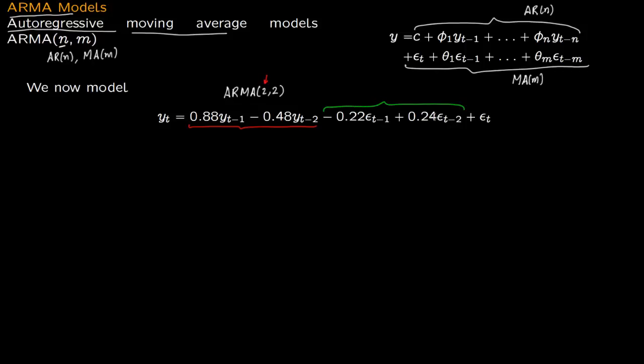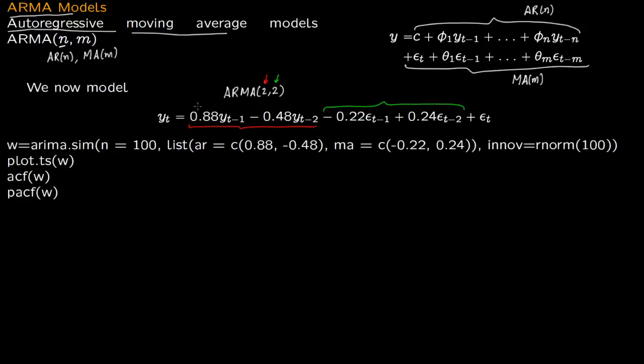The moving average has two lags. The coefficients are 0.88 and -0.48 for the autoregressive part, and -0.22 and 0.24 for the moving average part.